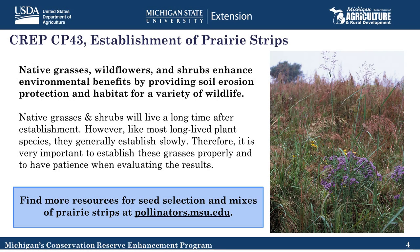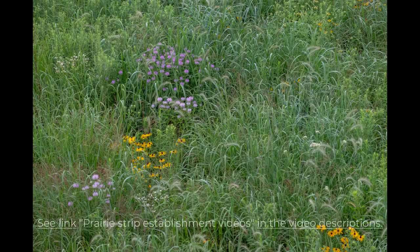When we planted our prairie strips at KBS, we chose species that deliberately gave us flowering and pollinator resources throughout the year — species flowering from spring all the way through summer and fall, with grasses that wouldn't be too competitive with the flowering species. We ended up with two pounds per acre of grass seed spread across four species, choosing not to include switchgrass because it can be quite competitive in some environments. We also had two pounds per acre of wildflower seeds spread across 18 different species to achieve flowering across the whole year.